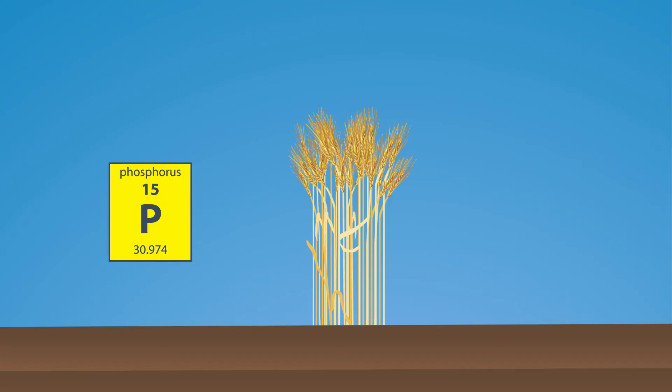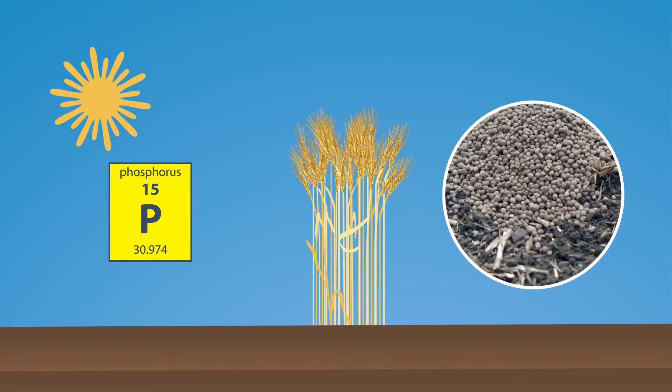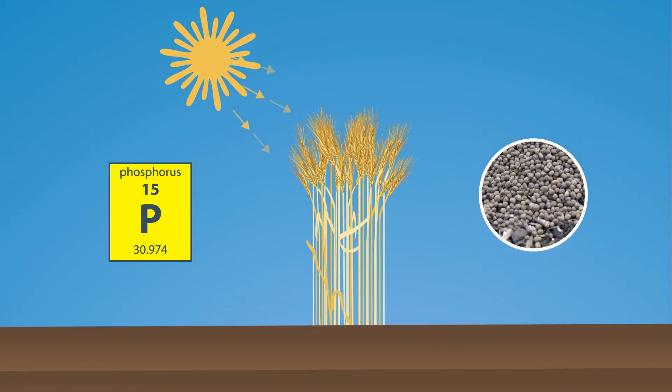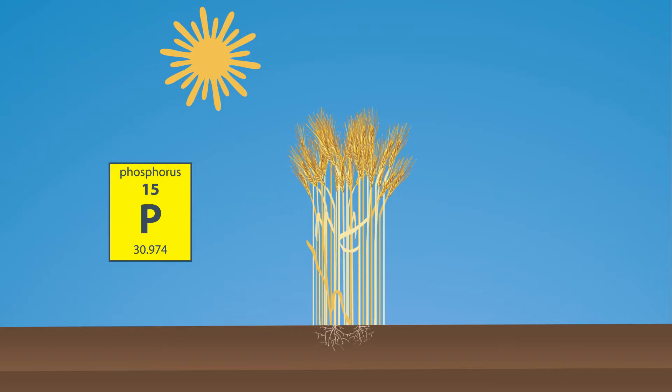Phosphorus is referred to as the enforcer. It helps the plant trap and use the sun's energy to make food through photosynthesis. Plants also need phosphorus to grow healthy root systems.